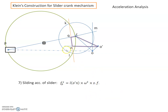Finally, the sliding acceleration of slider P, indicated by F_S(P), equals the length of vector O'N multiplied by omega squared and the scale factor. To summarize: when the crank rotates with non-uniform speed, crank OC has two components - tangential OO', centripetal OC, and total O'C. The connecting rod has acceleration of P relative to C with centripetal QC, tangential QN, and total CN. The slider has sliding acceleration given by vector O'N.